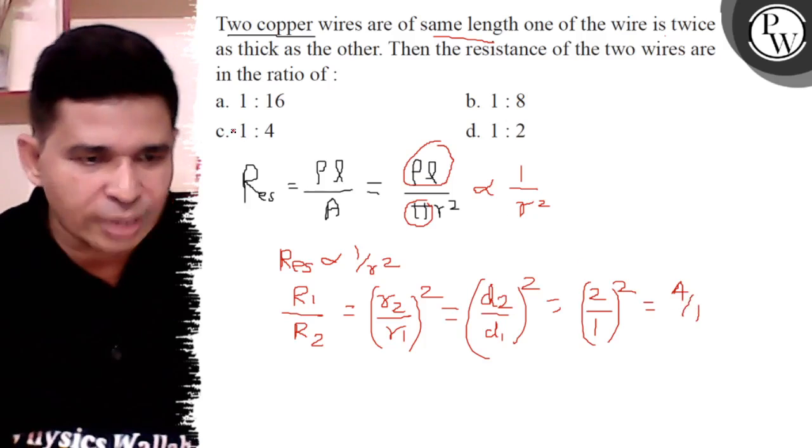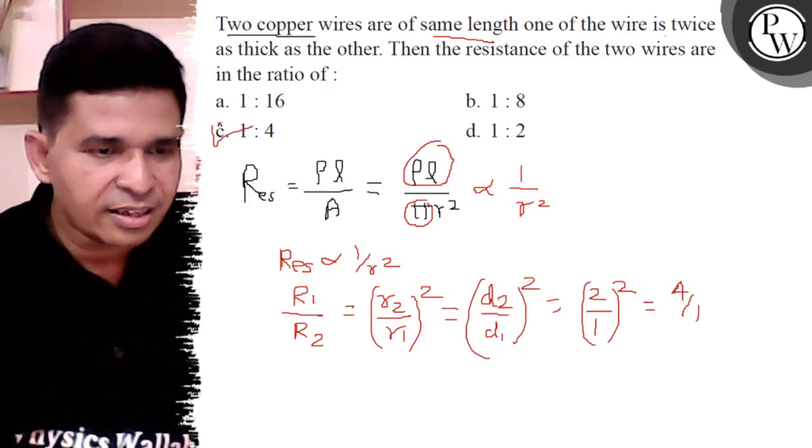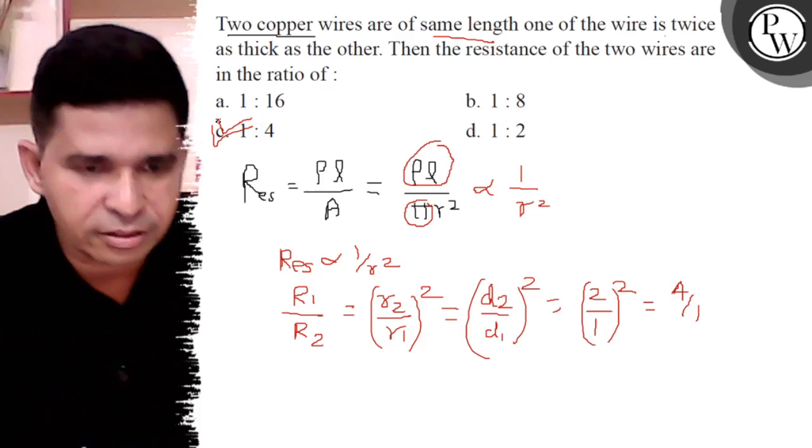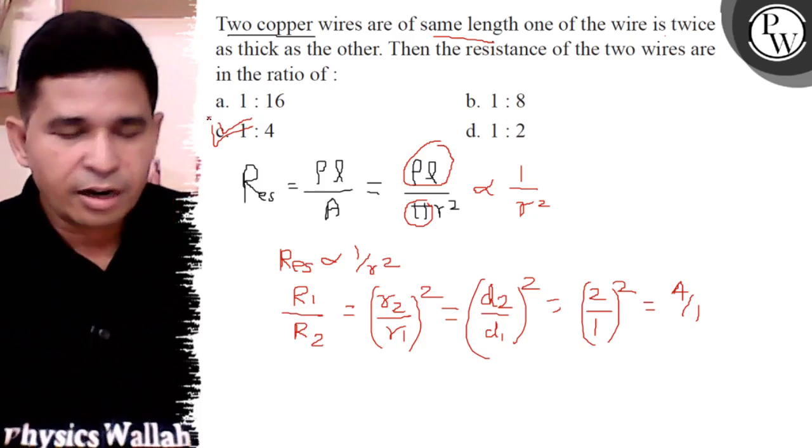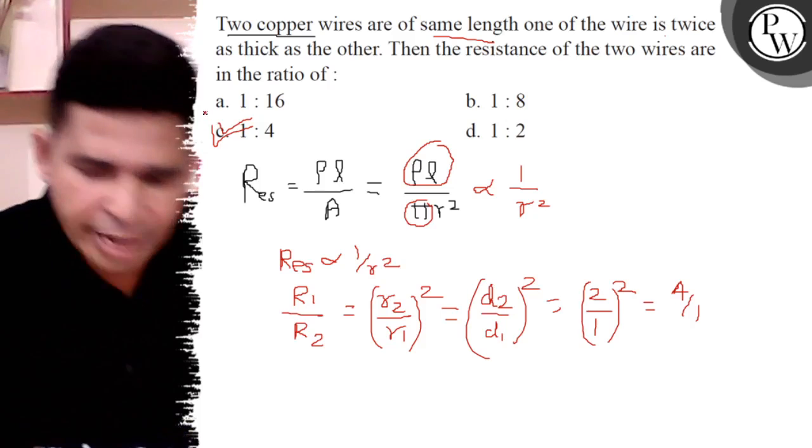Is that clear? So answer is C, one is to four or four is to one. Clear? Thank you, all the best.